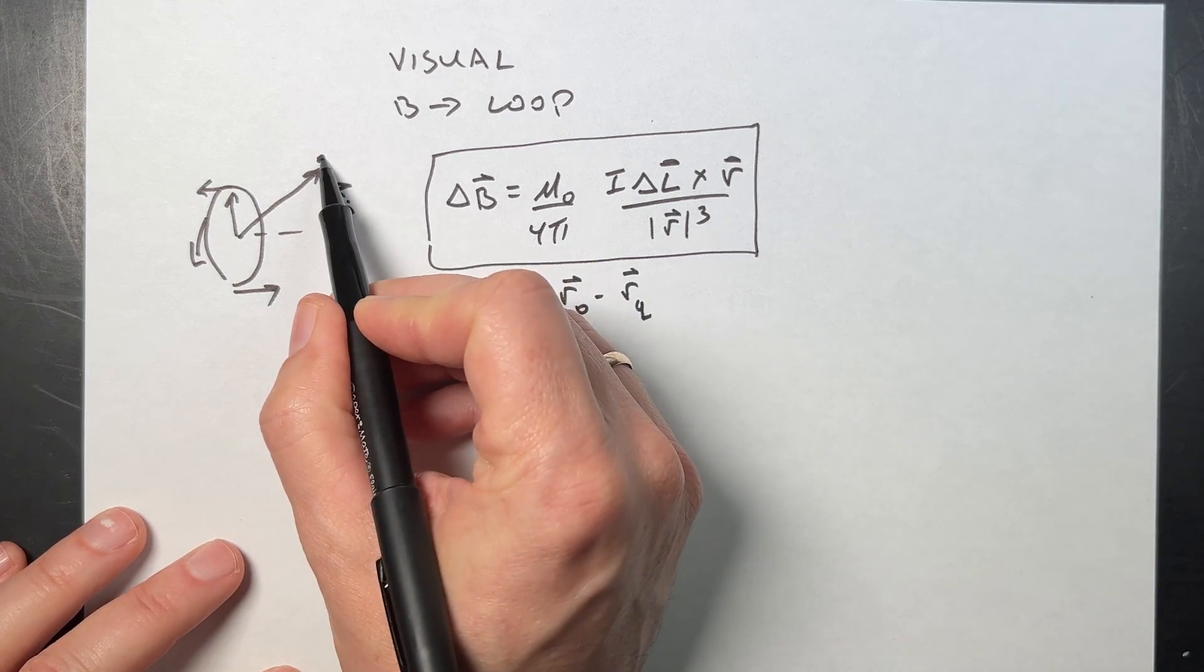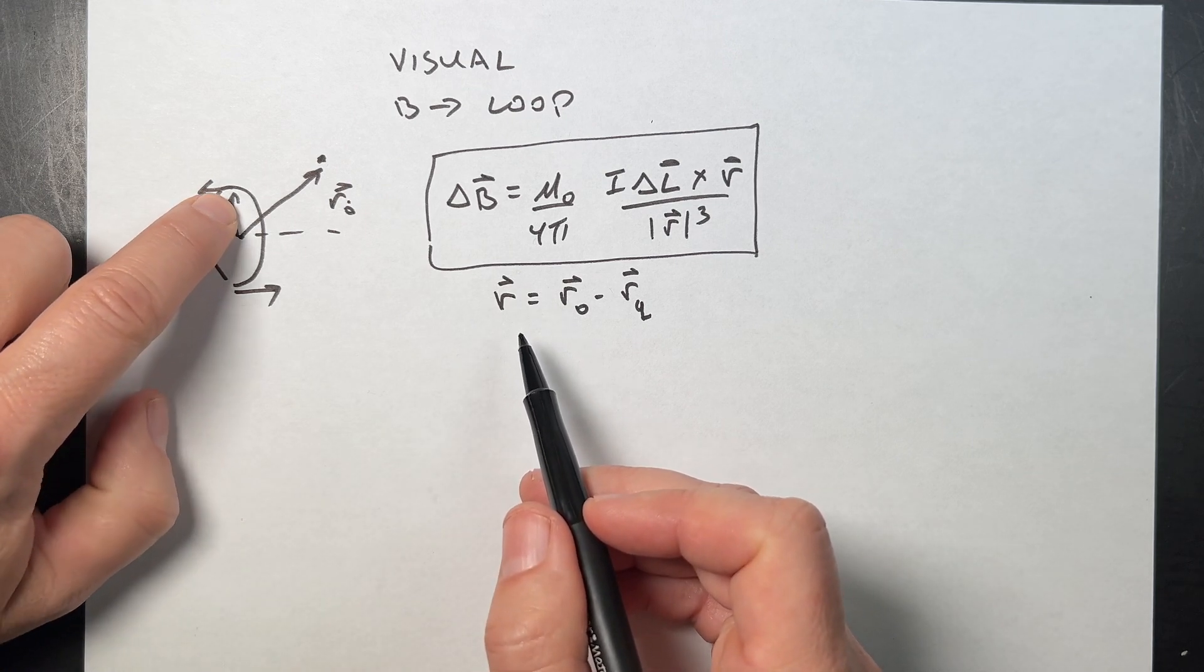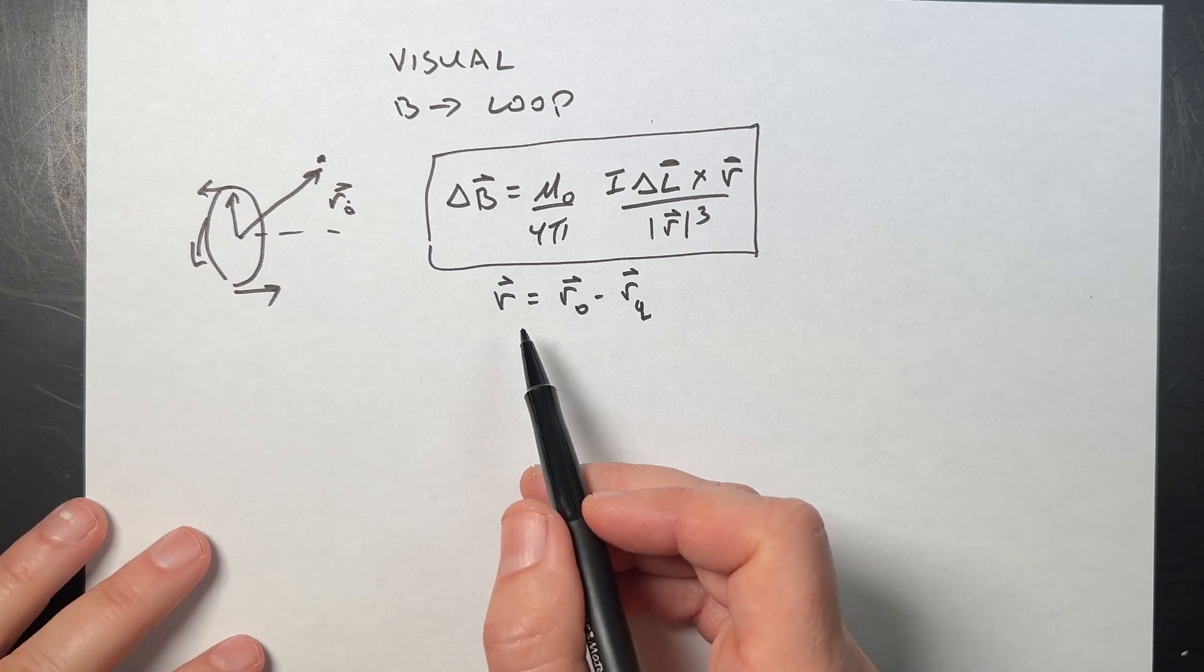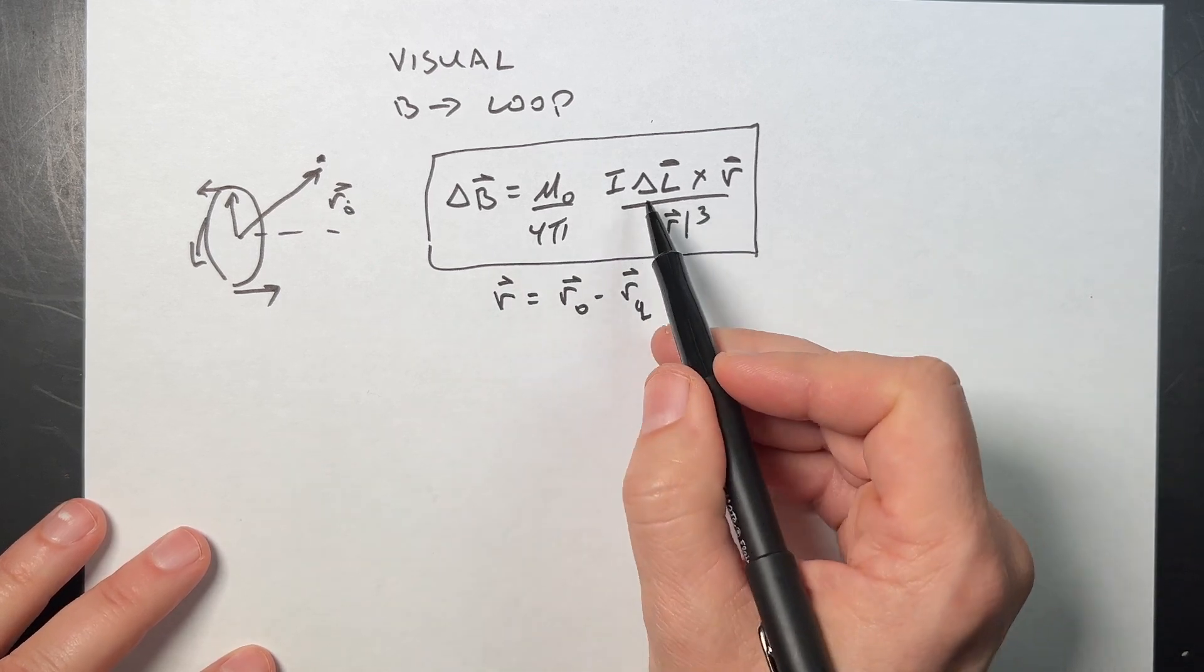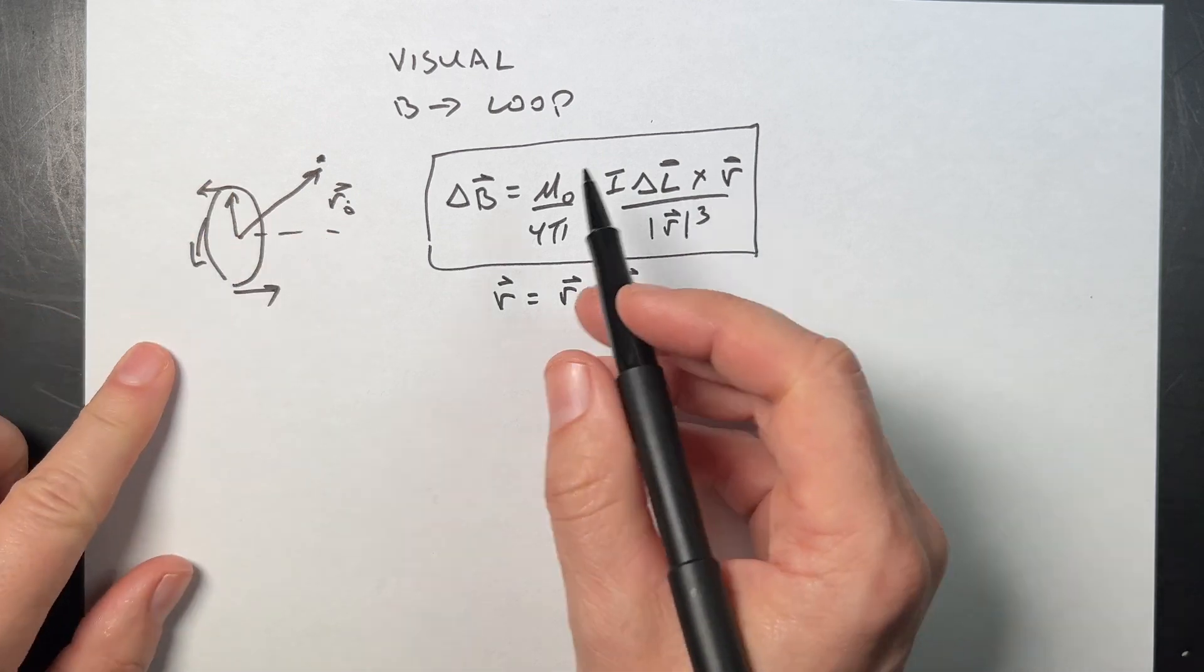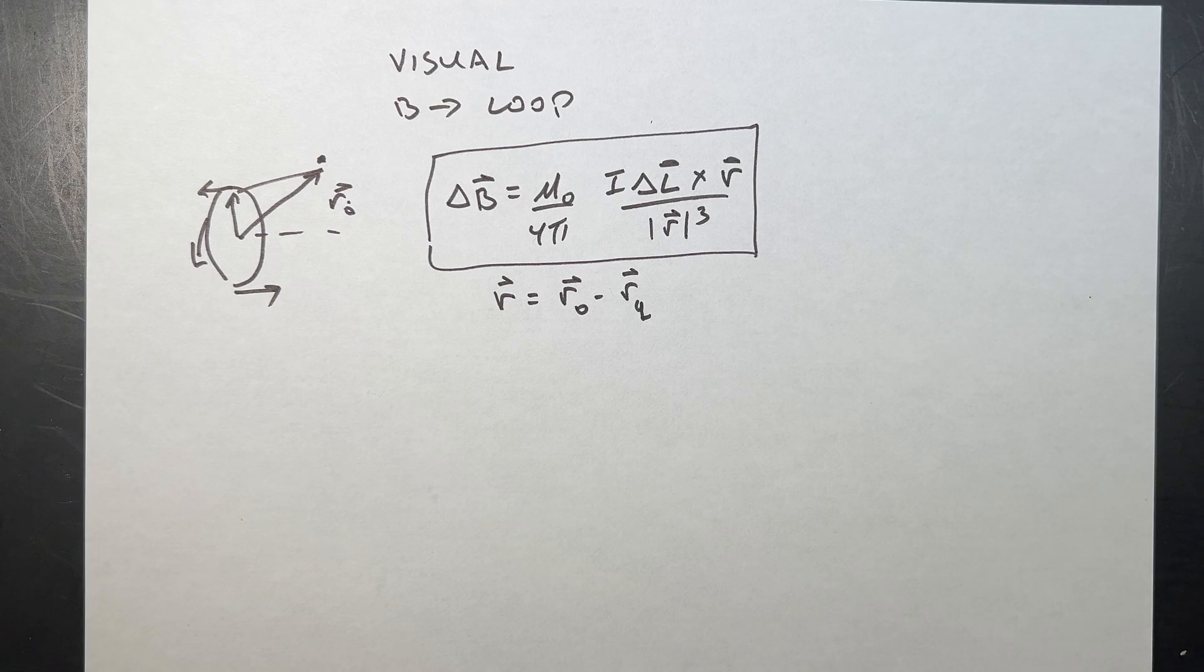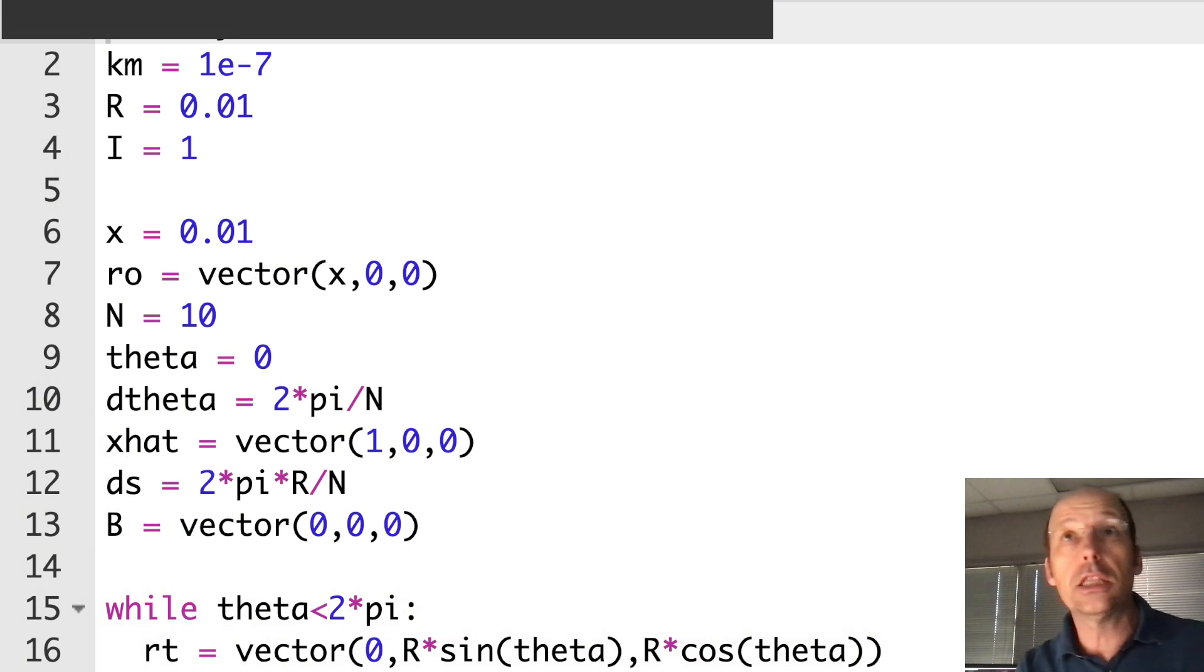We have this expression for the magnetic field due to a short little piece of wire. We can break this into a bunch of little pieces, but all the pieces have different directions for delta L. I'm going to pick an observation location, find the location of each piece of wire, find the contribution of the magnetic field, go around the wire, and get the total. We have mu naught over 4 pi, I delta L is the vector length of the little piece, R is the vector from here to there, then magnitude cubed. That is the cross product, which we can do in Webby Python.